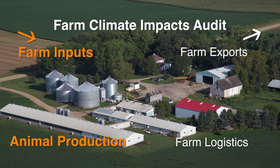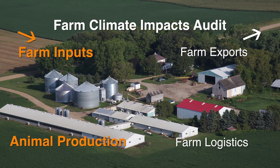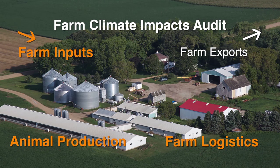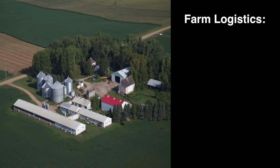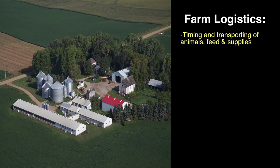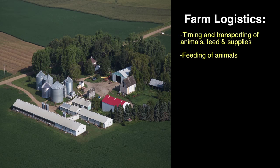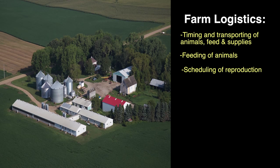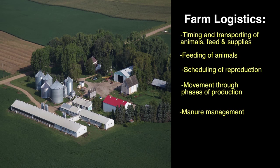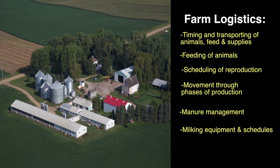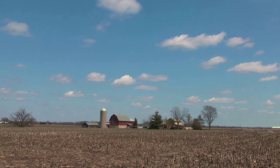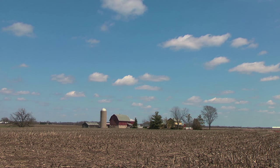After looking at the impacts of climate on farm inputs and animal production, it's important to examine impacts on farm logistics, which are quite complex. Logistics include the timing and transport of young animals, feed, and supplies to the farm; the feeding of animals; scheduling of reproduction; animal movement through phases of production; manure management; milking equipment and schedules; farm maintenance; and more. The farmer must determine how vulnerable these systems are to climate.